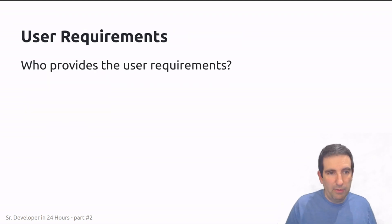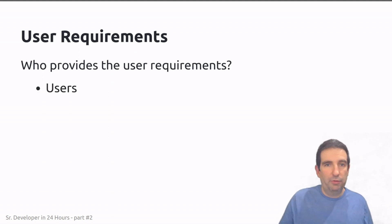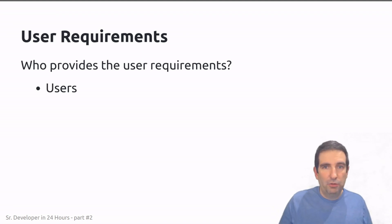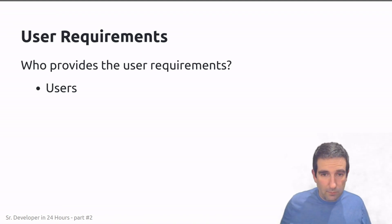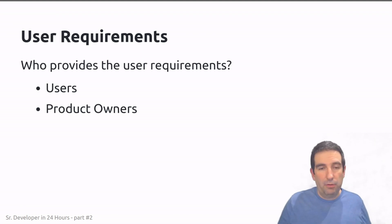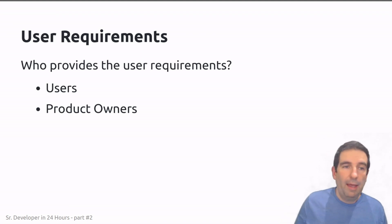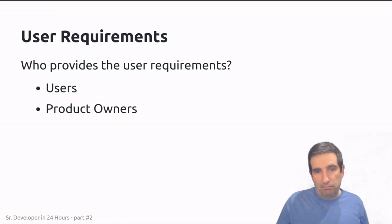Who provides the user requirements? Ideally they come from the users themselves, who have some mechanism to tell us what they want to see in the software. Sometimes this is gathered by product owners — people within the organization who provide the interface between users and the development team, and part of their responsibility is to gather these requirements.